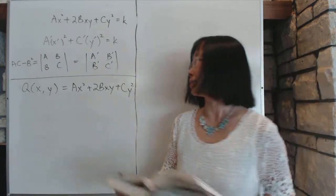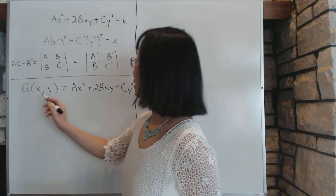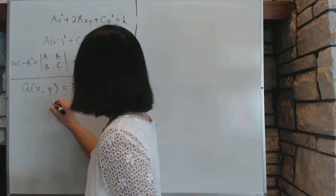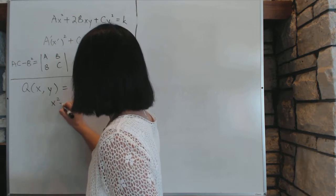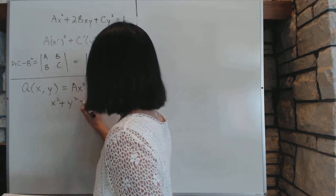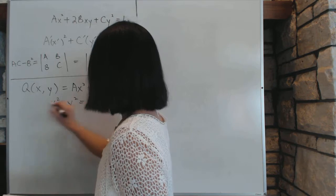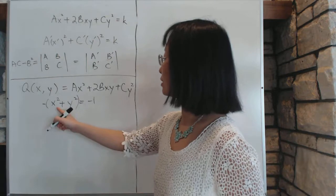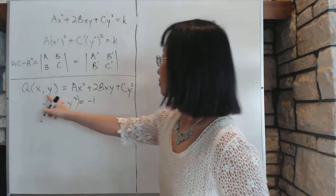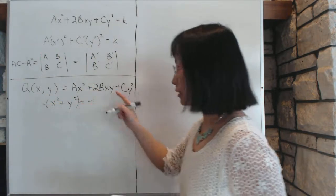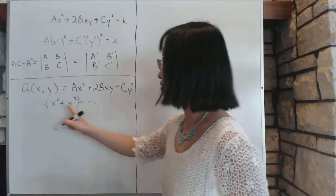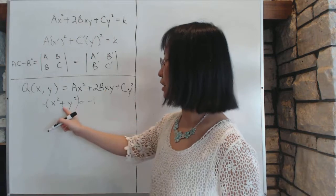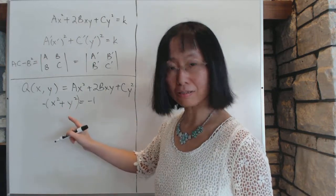Now to use Lagrange's method, we will use the Q(x,y), that's the function we have, and we will use the constraint of the unit circle. This is x squared plus y squared equal to 1. And I will add a negative sign here for convenience. Yes, this is the unit circle. So this function, being that it is a continuous function and the unit circle being a closed and bounded set, this function is going to achieve its maximum and its minimum on the unit circle.